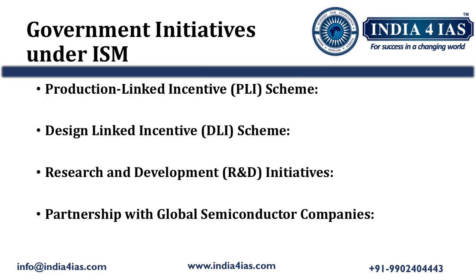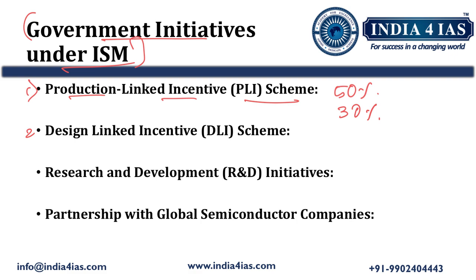The first government initiative is the Production Linked Incentive (PLI) scheme, which provides up to 50% financial support for development of semiconductor fabrication units and 30% financial support for assembly, testing, marking and packaging units. The second initiative is the Design Linked Incentive (DLI) scheme, which offers incentives for companies focused on chip design, development and deployment, and provides financial assistance for start-ups and firms working on semiconductor design and innovation in India.